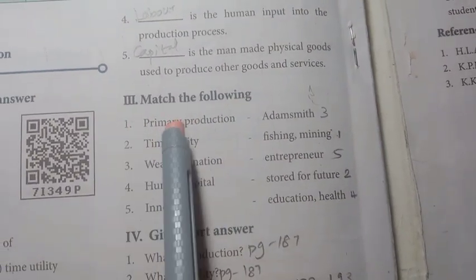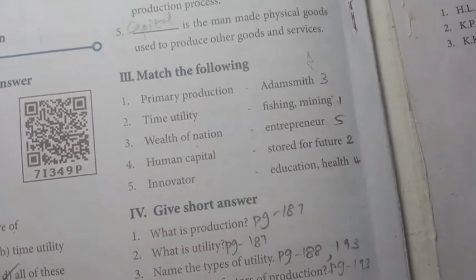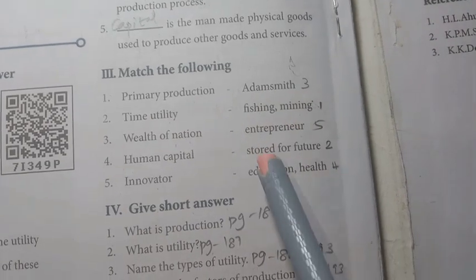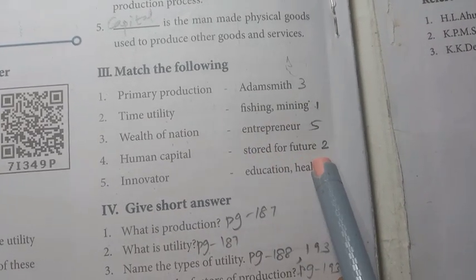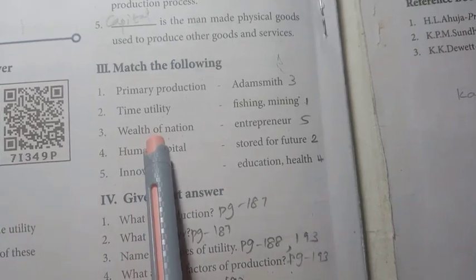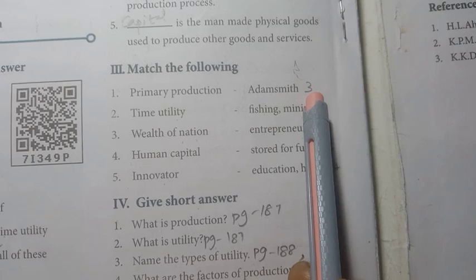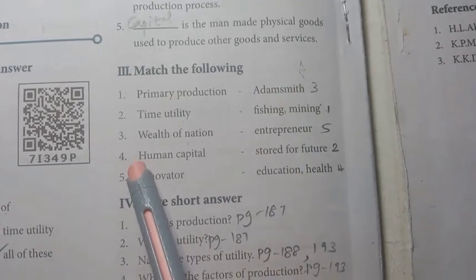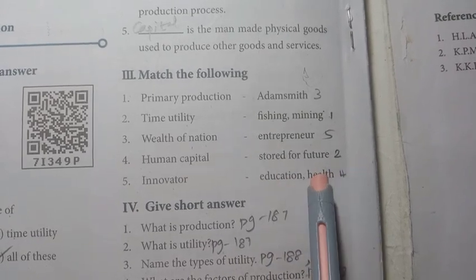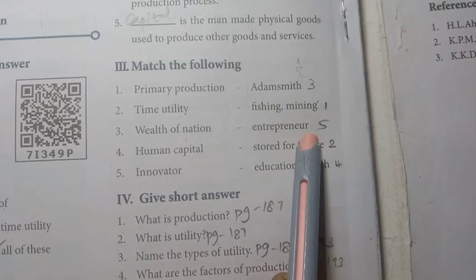Match the following. Primary production matches with fishing or mining. Time utility matches with stored for future use. Wealth of Nations matches with Adam Smith. Human capital matches with education and health. Innovator matches with entrepreneur.